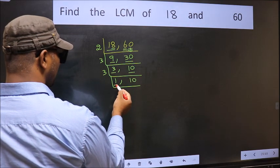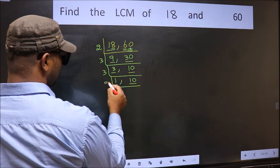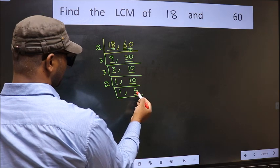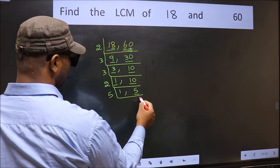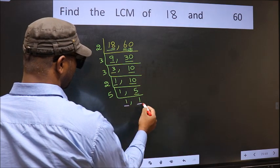We got 1 here, so focus on the other number, 10. 10 is 2 fives, 10. Now we have 5. 5 is a prime number, so 5 ones is 5. So we got 1 in both places.